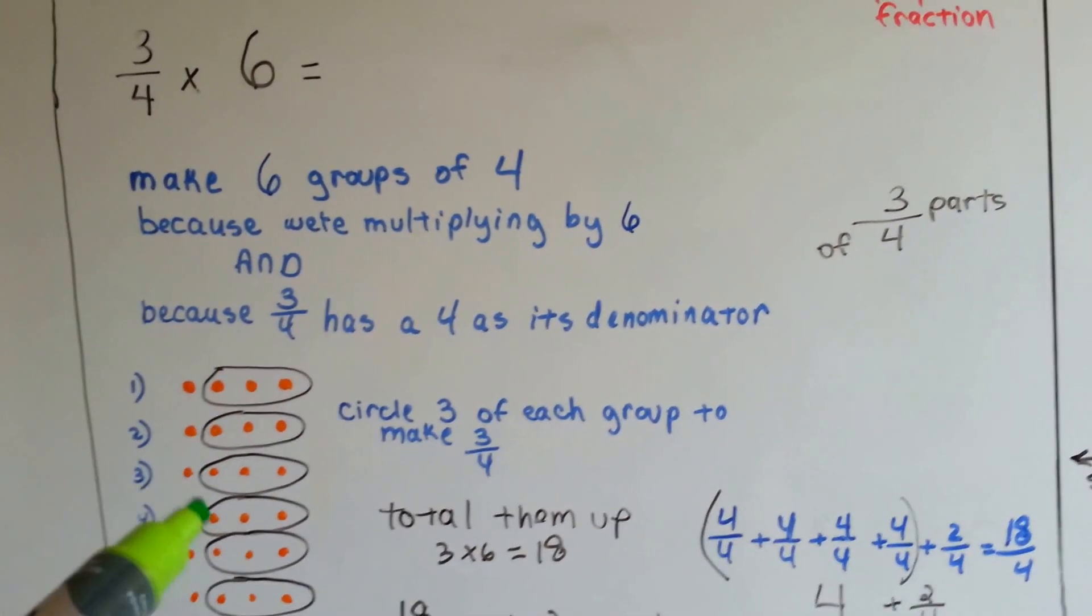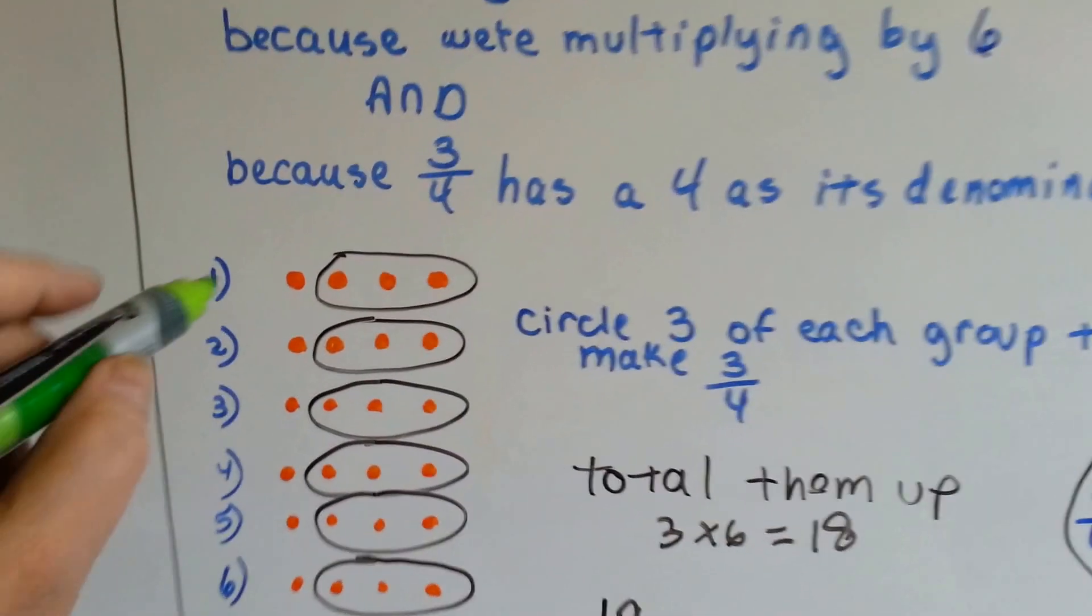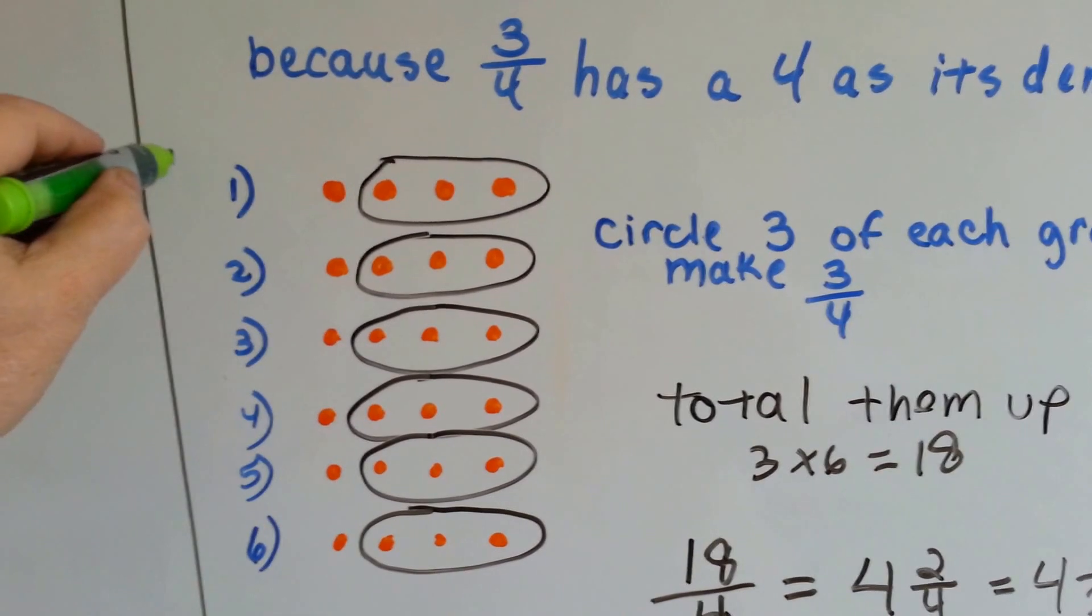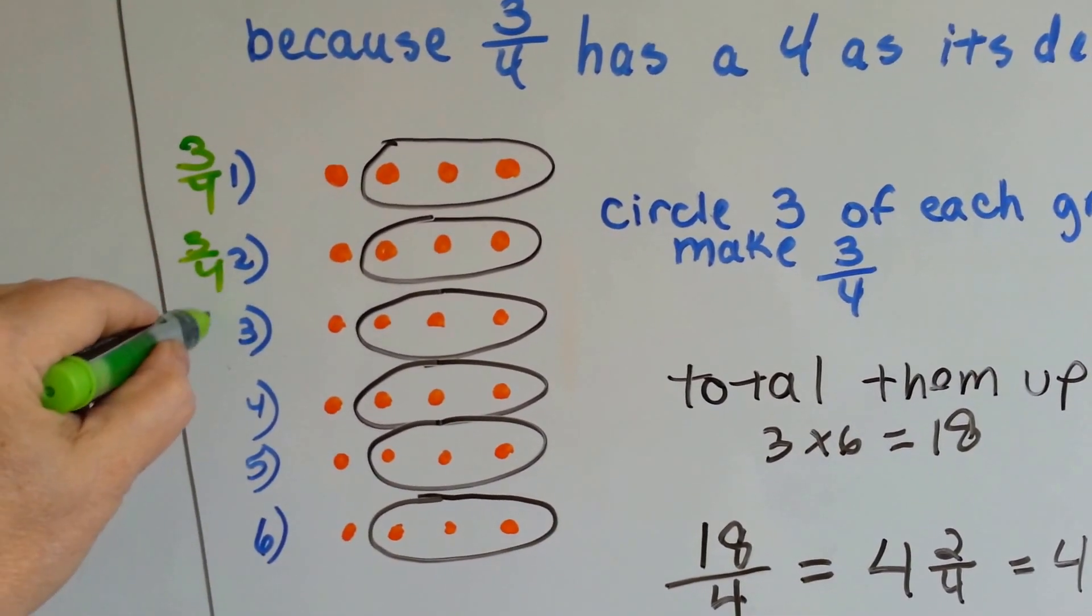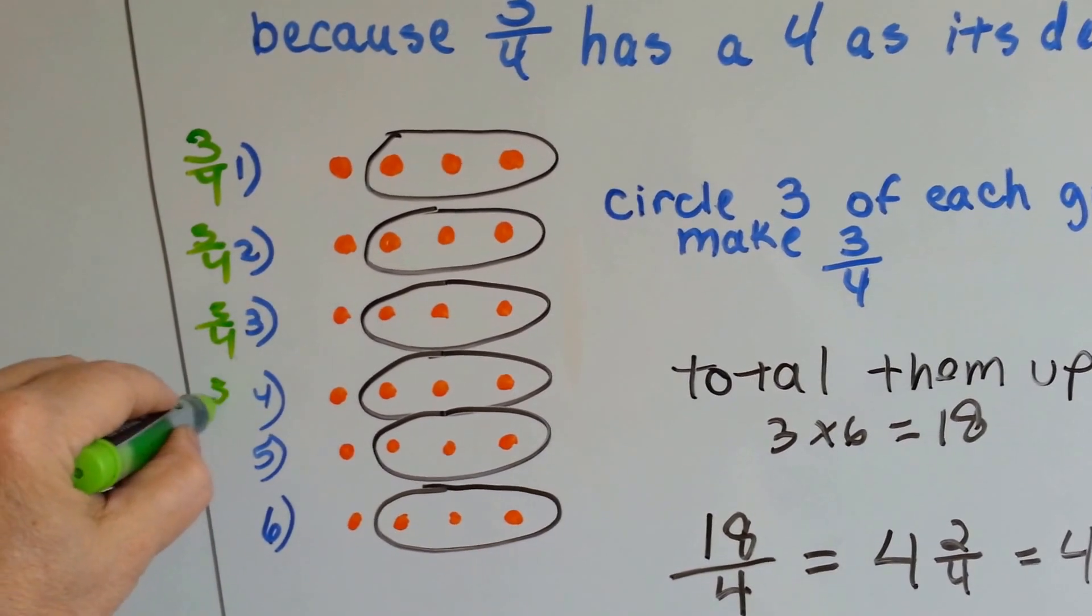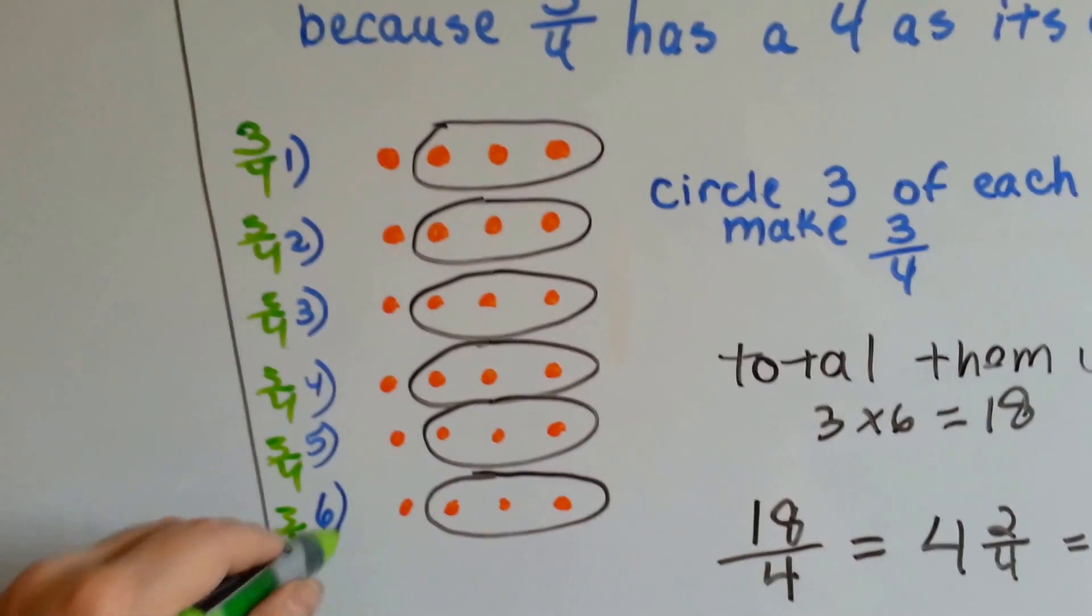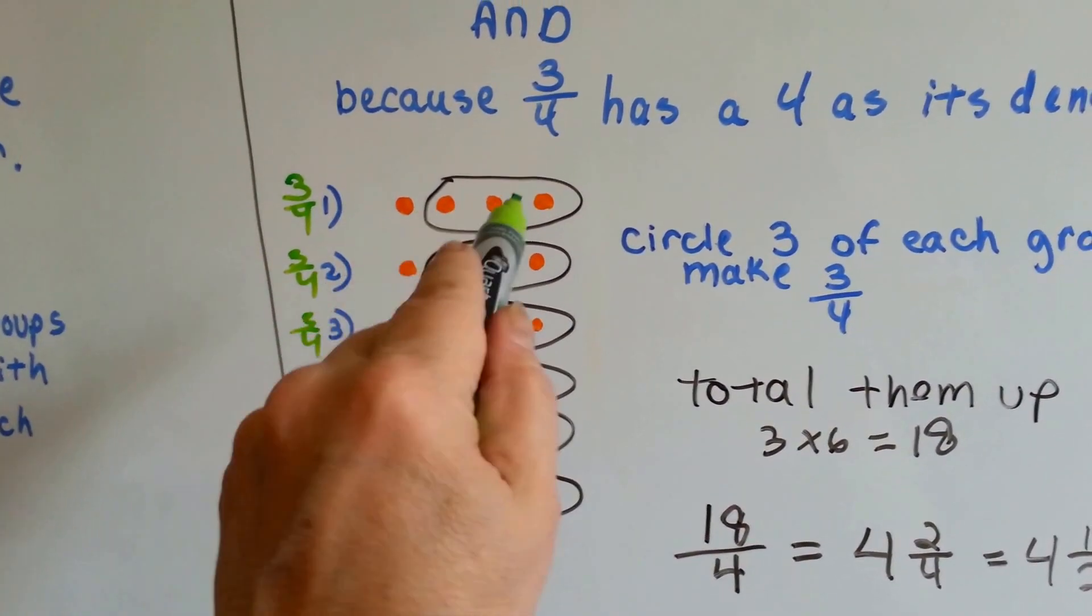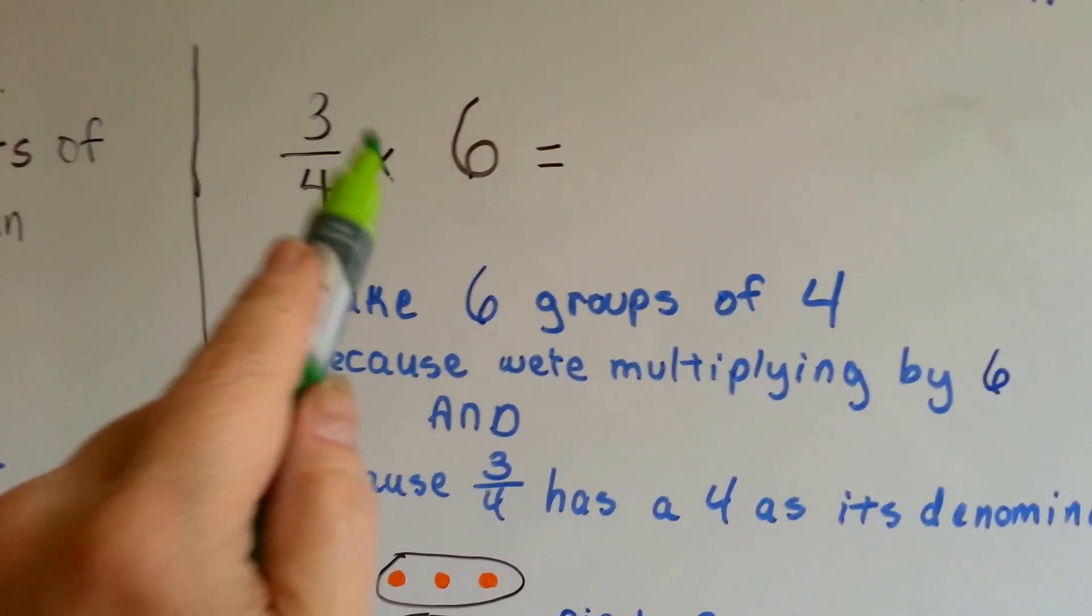Then, to represent the three-fourths, I only circled 3 out of the 4 dots. So each one of these 6 is equal to three-fourths. By circling only 3 out of the 4, I made a three-fourth. Now I can do it 6 times.